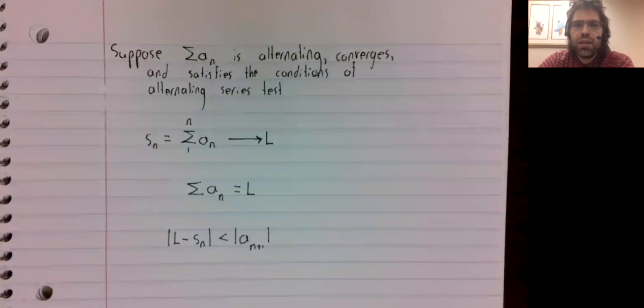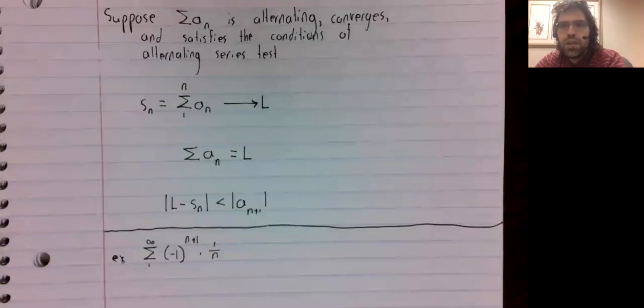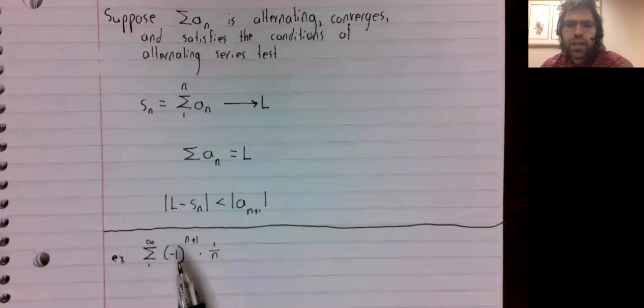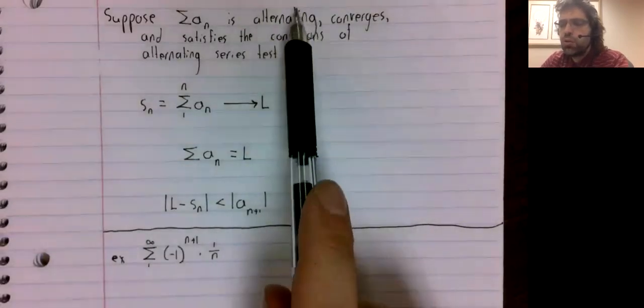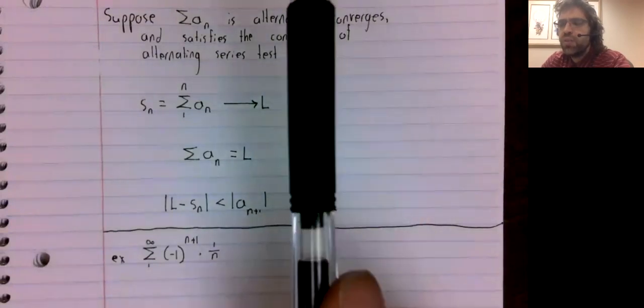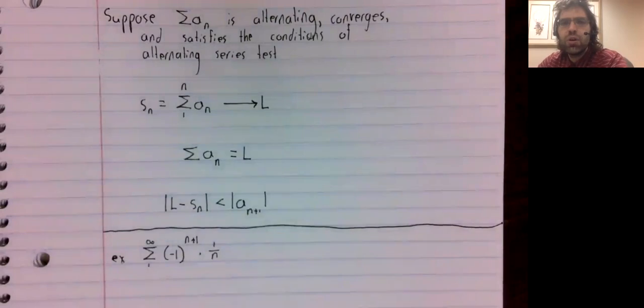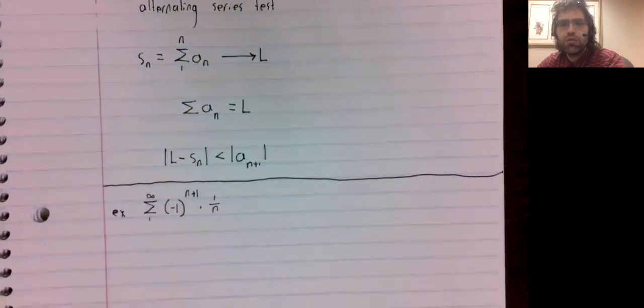Let's try to look at an example to nail this home. Here is the alternating harmonic series. This was our example in a previous video where we used the alternating series test to show convergence. So it's alternating, converges, and satisfies the conditions of the alternating series test.